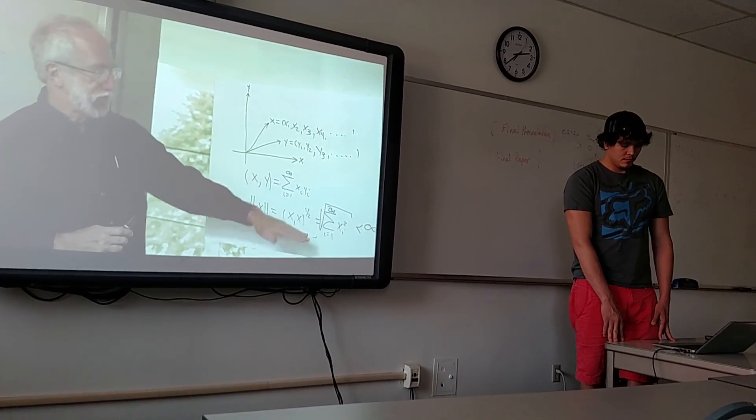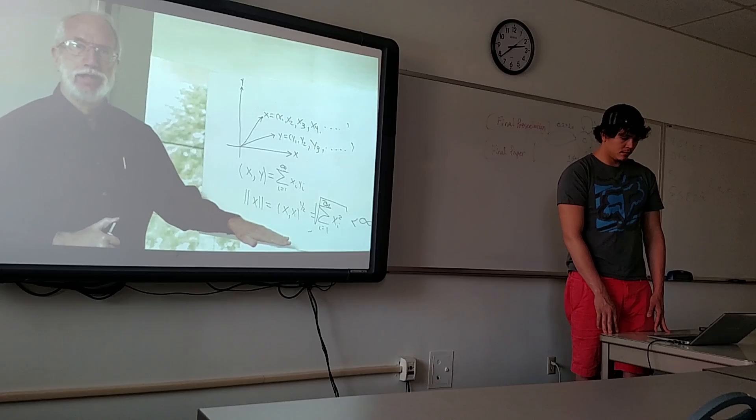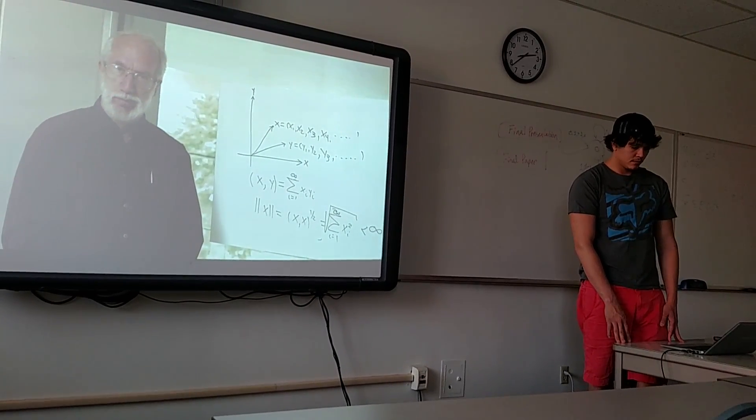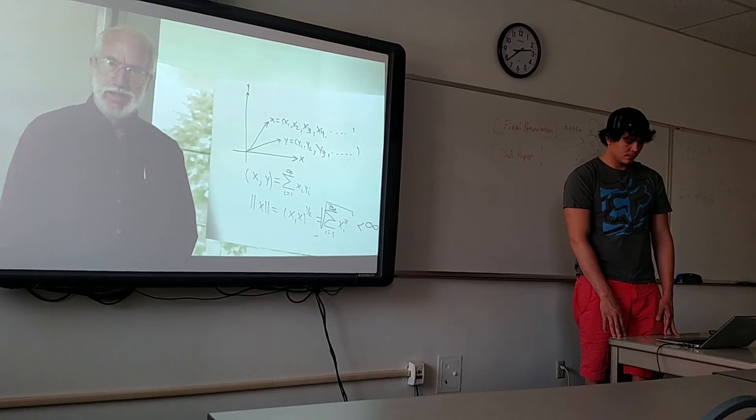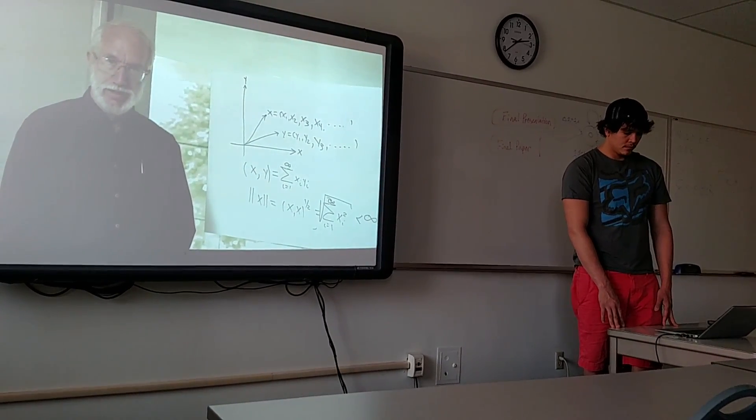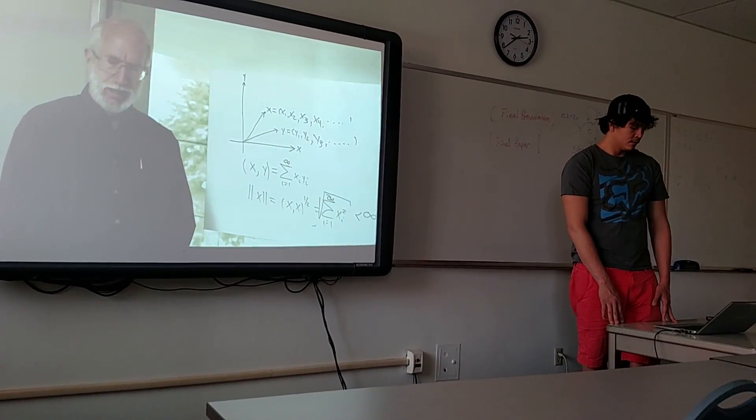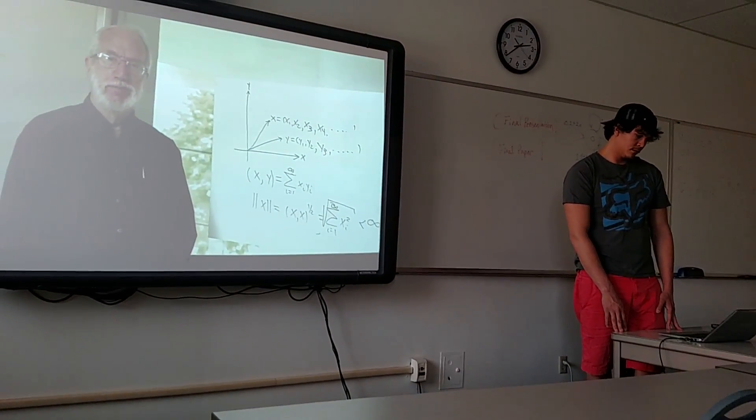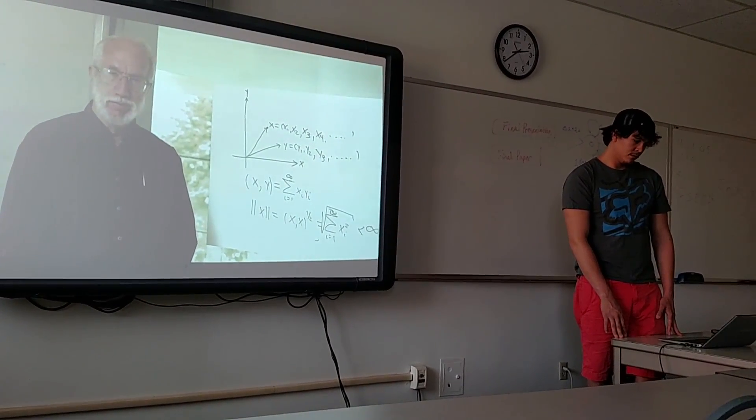Ordered systems of numbers which satisfy these two properties are called Hilbert spaces. They're named Hilbert spaces in honor of David Hilbert, a famous professor who lived at the beginning of the 20th century and who invented Hilbert spaces, which were immediately used thereafter by Schrodinger and other people to describe problems in quantum mechanics.